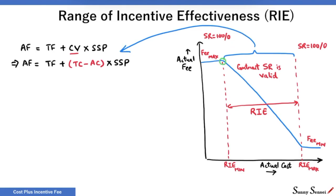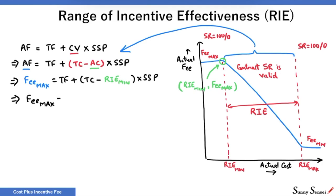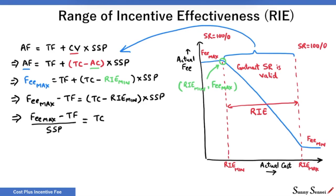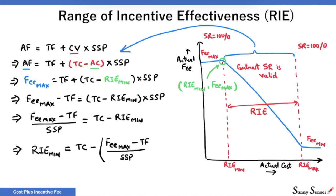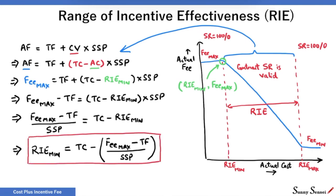When the actual cost equals RIE minimum, the actual fee equals the maximum fee. We can replace the actual fee with the maximum fee and the actual cost with RIE minimum. Solving further, moving RIE minimum to the left of the equation, we have the formula for RIE minimum. If we know the target cost, maximum fee, target fee, and seller share of risk in percent, we can find RIE minimum — the lower limit of range of incentive effectiveness.